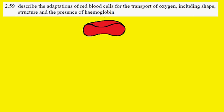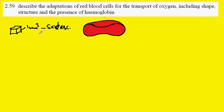IGCSE Biology Syllabus Statement 259: Adaptations in Red Blood Cells for the Transporting of Oxygen. First of all, if we had a cubic millimetre of blood, there would be five times ten to the six red blood cells — five million red blood cells per cubic millimetre. That means about 25 trillion cells in a five litre circulatory system.